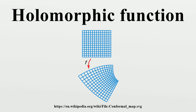Here gamma is a rectifiable path in a simply connected open subset U of the complex plane C whose start point is equal to its end point, and F: U→C is a holomorphic function. Cauchy's integral formula states that every function holomorphic inside a disk is completely determined by its values on the disk's boundary. Suppose U is an open subset of C, F: U→C is holomorphic, and the closed disk D = {Z : |Z − Z0| ≤ R} is completely contained in U. Let gamma be the circle forming the boundary of D. Then for every A in the interior of D, where the contour integral is taken counterclockwise, the derivative F can be written as a contour integral using Cauchy's differentiation formula, for any simple loop positively winding once around A, and for infinitesimal positive loops gamma around A.